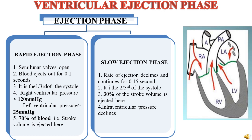During the slow ejection phase, the rate of ejection declines and continues for about 0.15 seconds. It constitutes about two-thirds of the systole, and only 30% of the stroke volume — that is 30% of 80 ml — is ejected here. In this phase the intraventricular pressure declines. Blood flows from the left ventricle and through the right ventricle to the pulmonary artery.